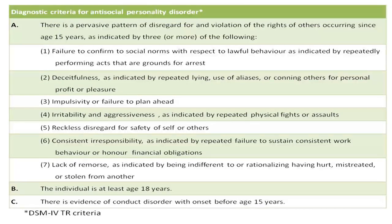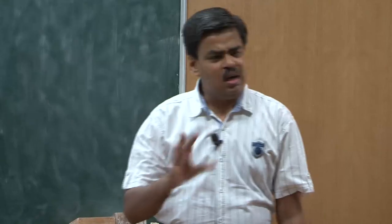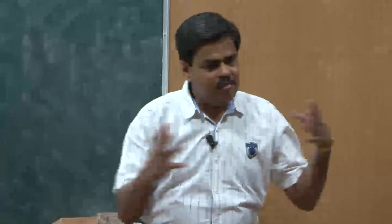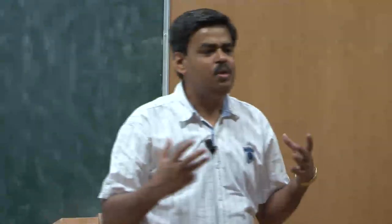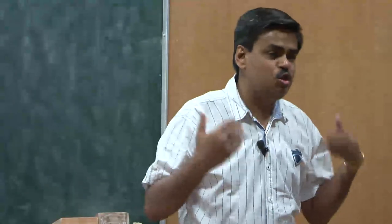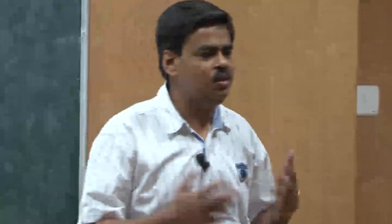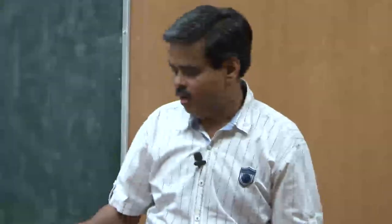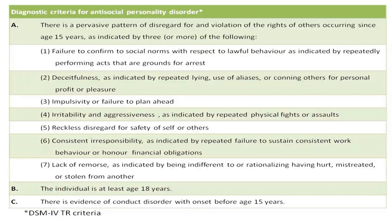Anti-social personality disorder is a disorder where you find a pervasive pattern of disregard for and violation of the rights of others, which starts usually at the age of 15 or so. There are 7 prominent symptoms, and a minimum of 3 of these 7 should be present for an individual to be classified as someone suffering from anti-social personality. Remember that there has to be a pervasive pattern of violating the rights of others.